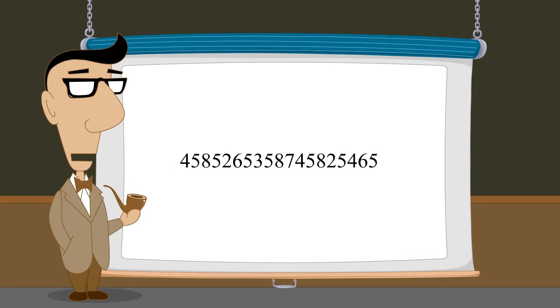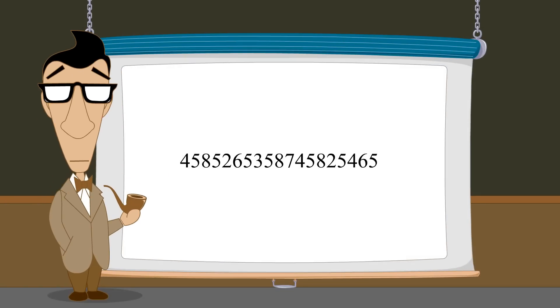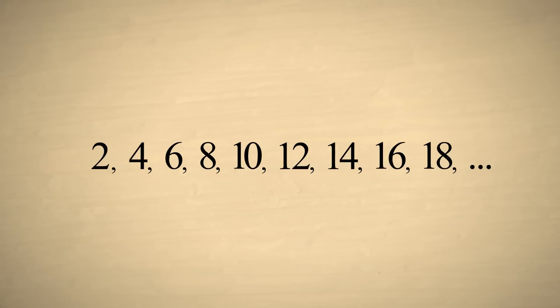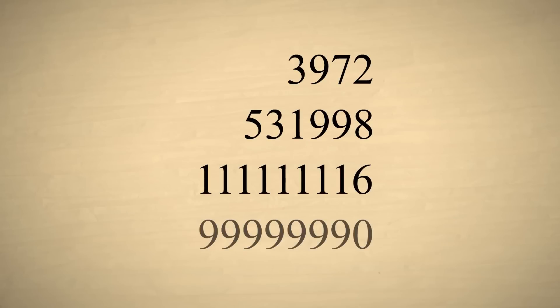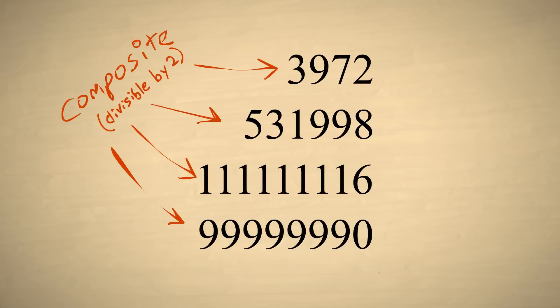It is sometimes hard to tell whether a large number is prime. However, there are a few easy tricks for spotting some numbers which are composite and therefore not prime. First of all, all even numbers are composite except for two, since even numbers are all divisible by two. Therefore, any number greater than two that ends with zero, two, four, six, or eight is a composite number. For example, all of these numbers are composite since they end with zero, two, four, six, or eight, and are therefore divisible by two.